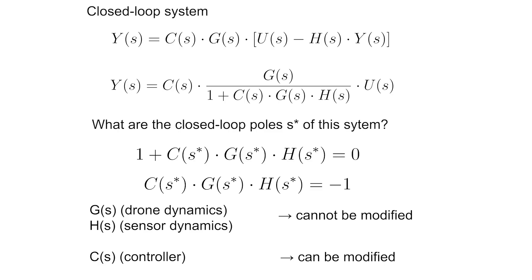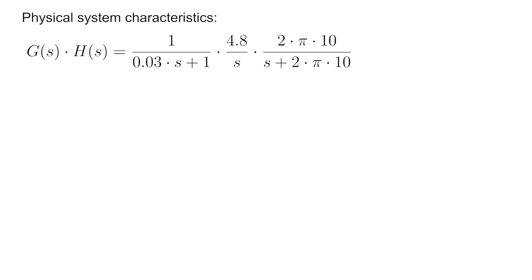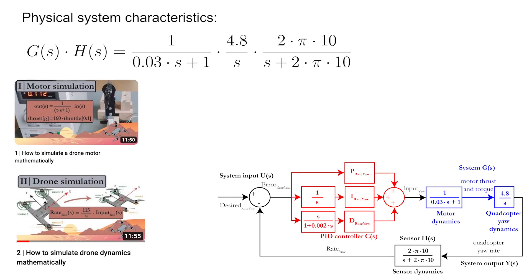But you have full control over the controller C to stabilize the system. Strictly speaking, it does not even have to be a PID controller. Let's first look at the characteristics of the physical system determined by G and H, for which we have already defined the transfer functions in the first and second video of the series.